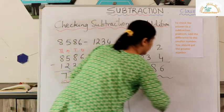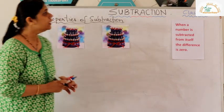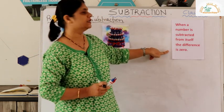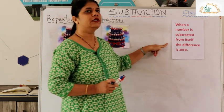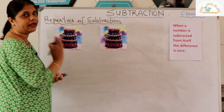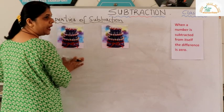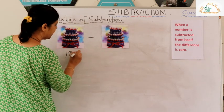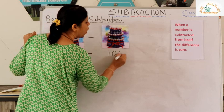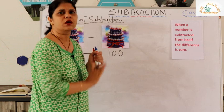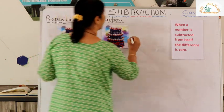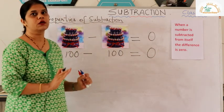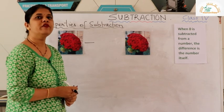Now we will see the properties of subtraction. The first property: when a number is subtracted from itself, the difference is zero. For example, if I have 100 chocolates and I give away all 100 chocolates to my friends, how many will I have left? Zero — because all the chocolates have been given away.